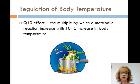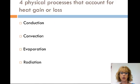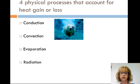Glycogen, as you may recall, is how animals store sugar in their muscles and liver. The hydrolysis of glycogen breaks it down so it can be used for cellular respiration. There are four physical processes that account for heat gain or loss. The first is conduction — the direct transfer of heat between molecules of objects in direct contact with each other. An example is when an animal sits in cold water or on a hot rock. Water is 5 to 100 times more effective than air in conducting heat, which is why hypothermia happens so quickly in water.